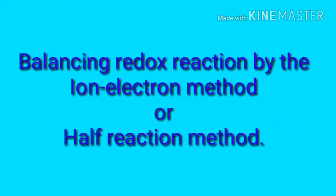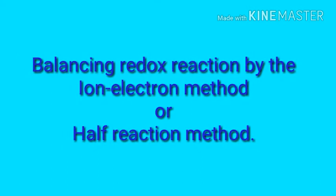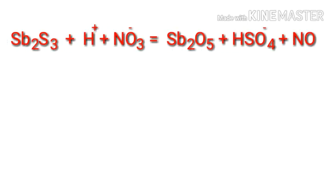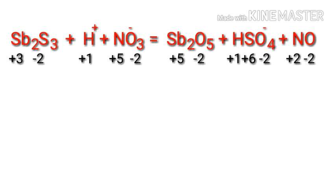Balancing redox reactions by the Ion Electron Method, or Half Reaction Method. Let's take a look at this equation representing a chemical reaction and figure out the reducing and oxidizing agents. In the Ion Electron Method, one reaction is divided into two half-reactions which are then balanced and added together. Identify the oxidation and reduction reactions.